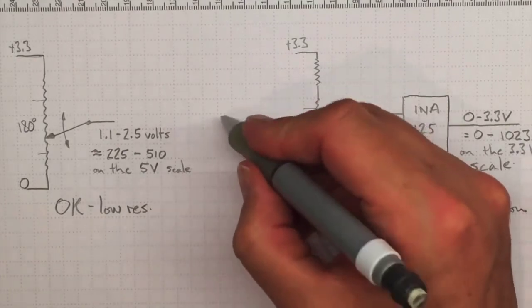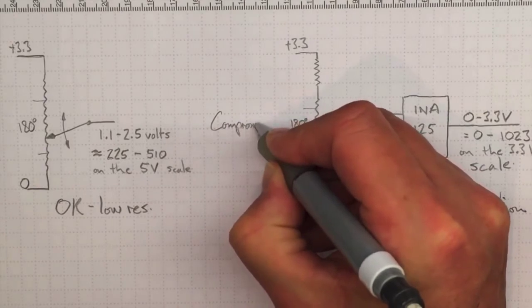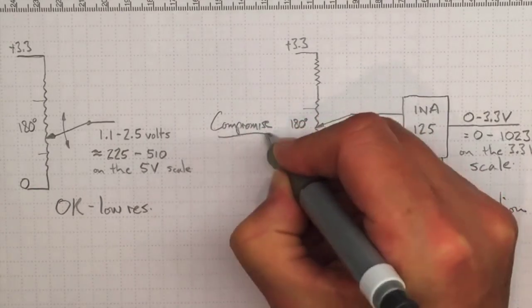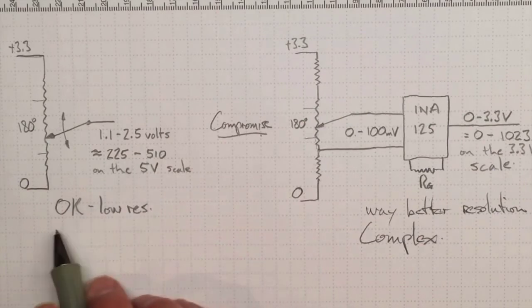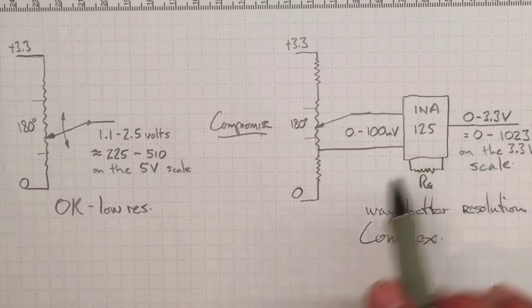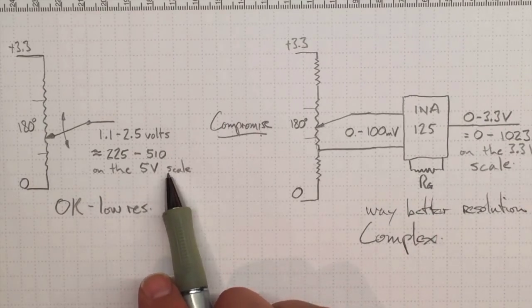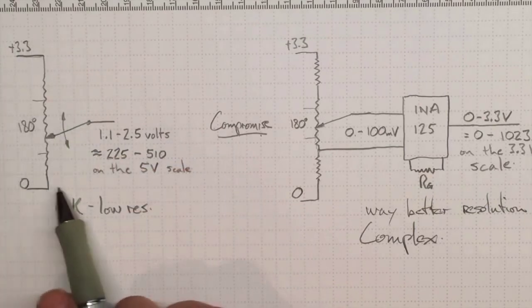So I'd like to find something in here that's a compromise that lets me use better resolution without getting into the problem of trying to set up an amplifier. So if I'm just a little bit smarter about what voltage scale I read on and maybe what supply voltage I put on my bridge, I might be able to do considerably better.